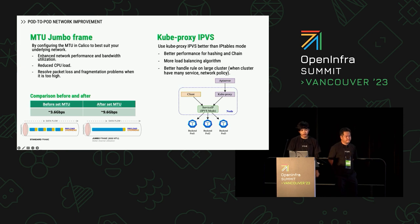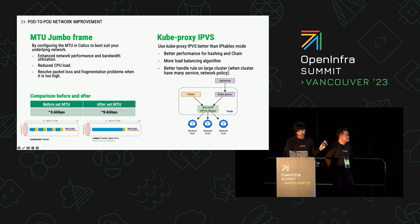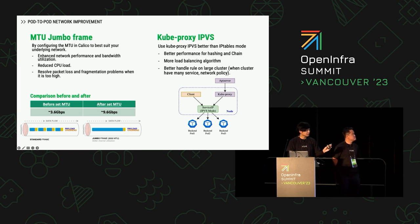The first topic is MTU Jumbo frames. By default, Calico sets a default MTU that works on various cloud providers, but it may not be suitable for every cloud environment. The first task after setting up Kubernetes is to configure the MTU Jumbo frame suitable for the OpenStack cloud environment. This adjustment helps reduce CPU loss caused by packet fragmentation and improves throughput during pod-to-pod communication. The comparison before versus after testing using iperf shows throughput improved from 3.6 Gbps to 9.6 Gbps on our compute framework.